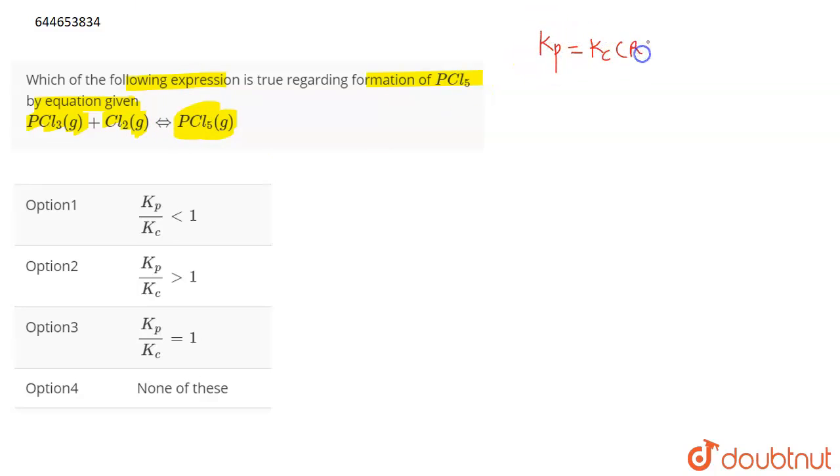Now if we talk about the relationship between Kp and Kc, that is given as Kp equals Kc RT to the power delta ng. Here Kp means the equilibrium constant in terms of pressure, Kc means the equilibrium constant in terms of concentration.